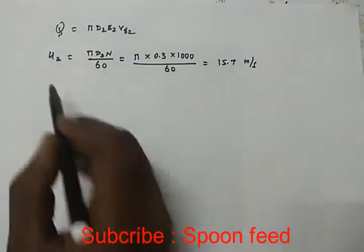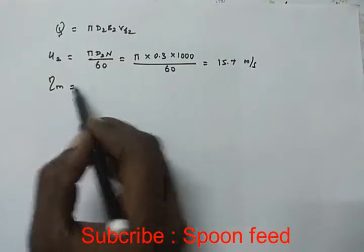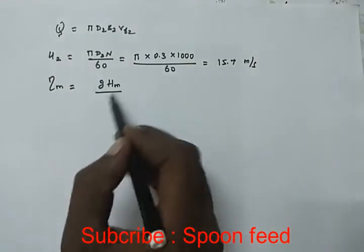Now for the monometric efficiency formula: g Hm equals Vw2 times u2.